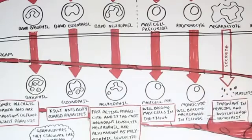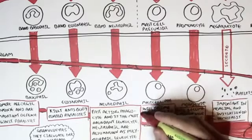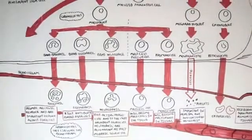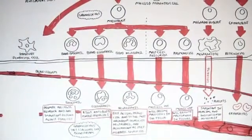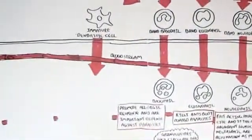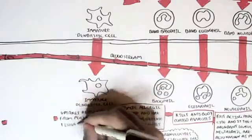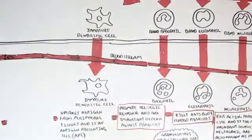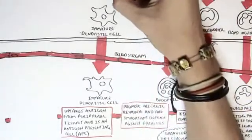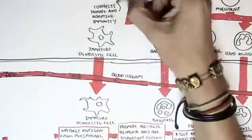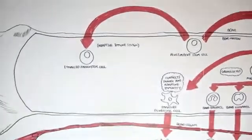Macrophages are antigen-presenting cells and they also eat up pathogens. Finally, the myeloid progenitor cell can also give rise to immature dendritic cells. Immature dendritic cells, once they leave the bone marrow, will still be immature dendritic cells. A dendritic cell's role is important because it is the connection between the innate and the adaptive immune system. Its role is to enter peripheral tissues, uptake antigens, and then present them as antigen-presenting cells to the adaptive immune cells. We'll learn about dendritic cells a lot more later on.